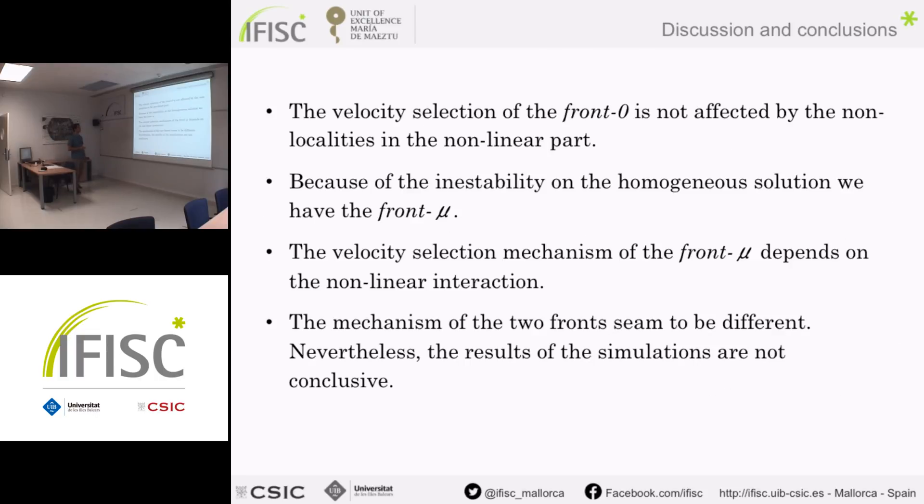To conclude, we have seen that the front-0 is not affected—it has the same velocities as the local FKPP. No matter if it leaves a pattern behind or not, the front is doing the same, ruled by the same mechanism. The instabilities produced by the non-localities have created this different front, front-mu, and it seems that this front-mu does have dependency on these non-localities, as more or less expected since we are in the homogeneous state with a lot of population, so the competition between them will have an important effect.